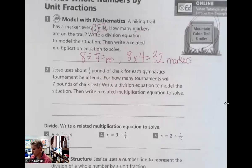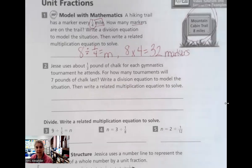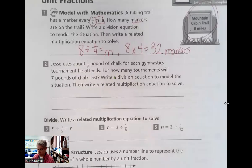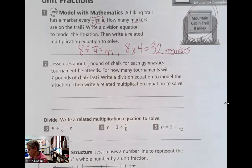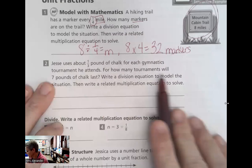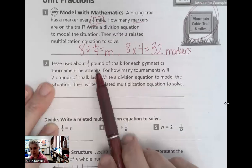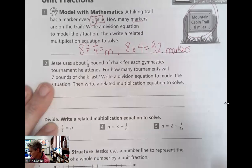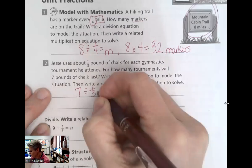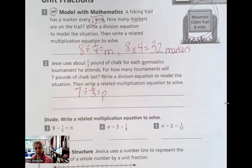Number two, Jesse uses about one-third of a pound of chalk for each gymnastics tournament he attends. For how many tournaments will seven pounds of chalk last? Write a division equation to model the situation. Again, then write the related multiplication equation. So he's got a third of a pound of chalk and he wants to see how long seven pounds will last if he uses a third of a pound for each tournament. So he has seven whole pounds that he's dividing into thirds to equal the pounds of chalk. I'll use a P for that.